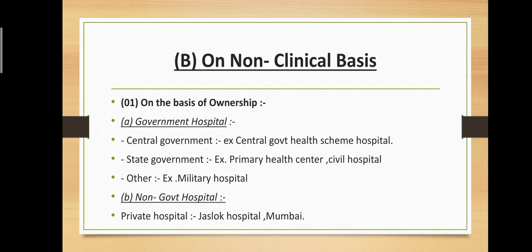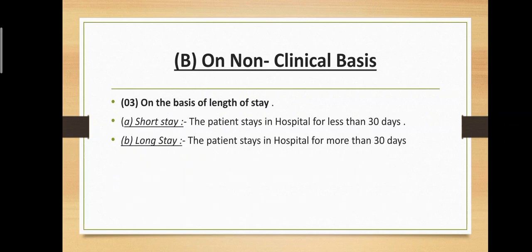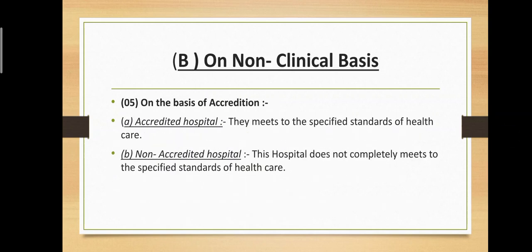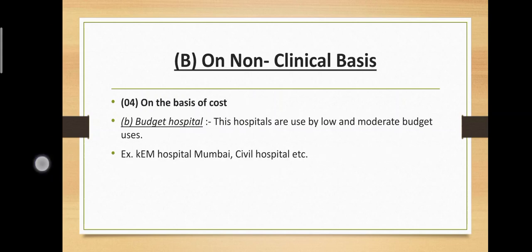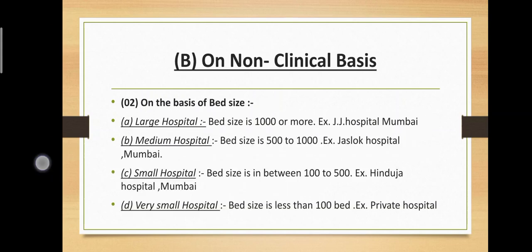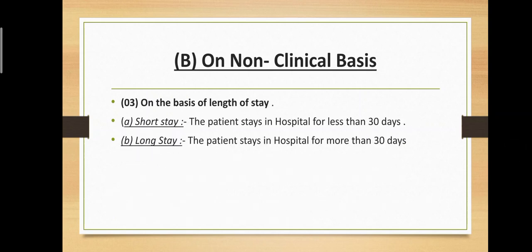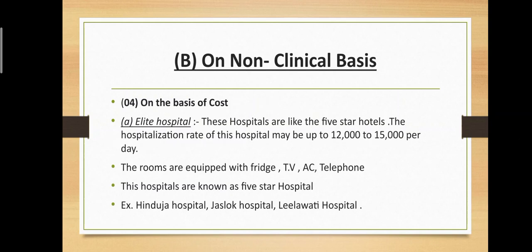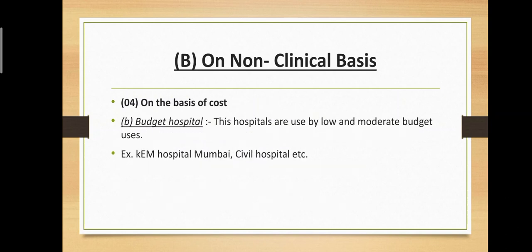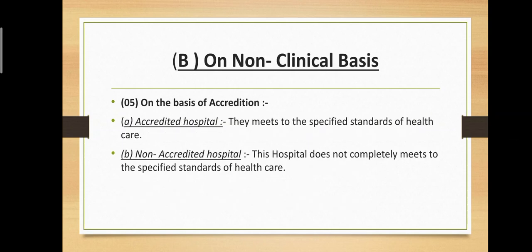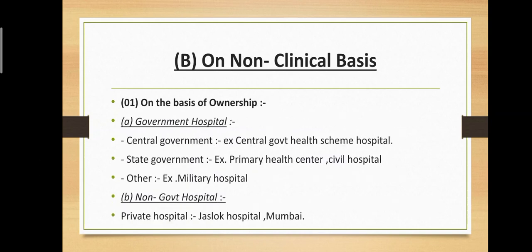The second main type is non-clinical basis, which is divided into five subtypes: first on the basis of ownership, second on the basis of bed size, third on the basis of length of stay, fourth on the basis of cost, and fifth on the basis of accreditation. Let's look at each in detail. On the basis of ownership, hospitals are divided into two types: government hospital and non-government hospital.